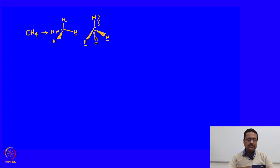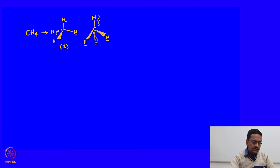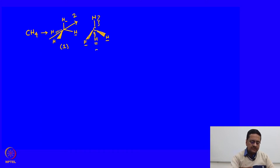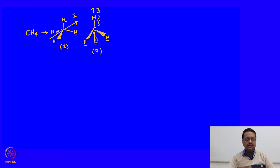One can also represent methane in a second way, where one carbon-hydrogen bond is in the plane of projection, two hydrogens are above the plane, and the third hydrogen is below the plane. The first projection is drawn to show the molecule contains a 2-fold axis, and the second type is drawn to show the molecule has a 3-fold axis. Depending on what we are trying to represent, the molecule can be drawn in different ways.